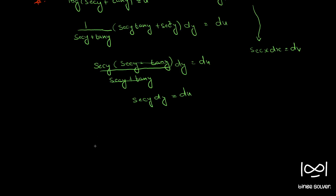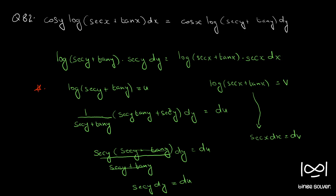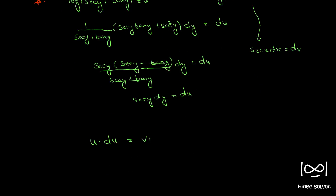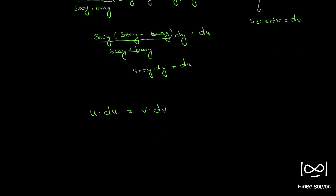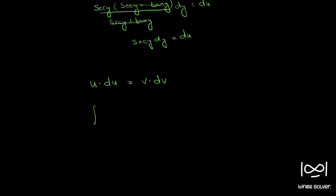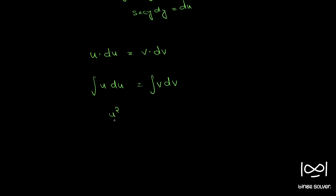So the whole equation reduces to a very simple form: u du = v dv. Now integration becomes very simple. We integrate both sides: integral of u du equals integral of v dv, giving us u²/2 = v²/2 + constant.